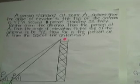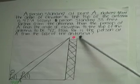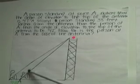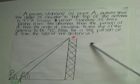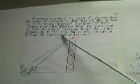A second person standing 33 feet away, farther from the antenna than the person at A, finds the angle of elevation to the top of the antenna to be 42 degrees. How far is the person at A from the base of the antenna?